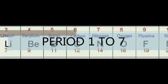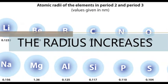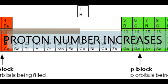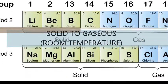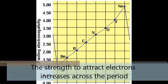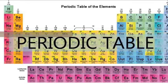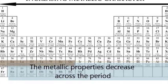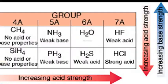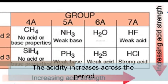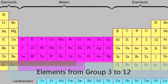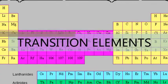Across Period 1 to 7: atomic radius decreases, proton number increases, state changes from solid to gaseous. The strength to attract electrons increases across the period. Metallic properties decrease across the period. Acidity increases across the period.